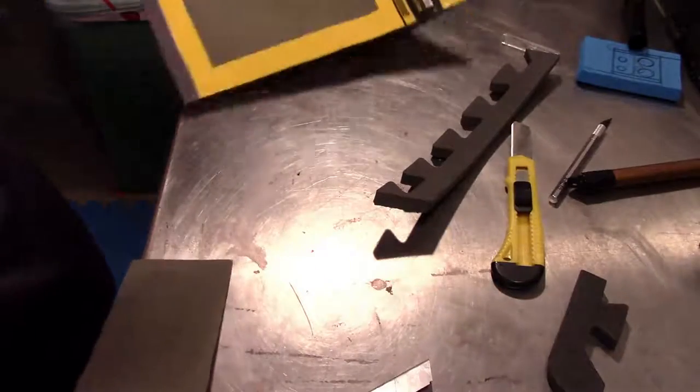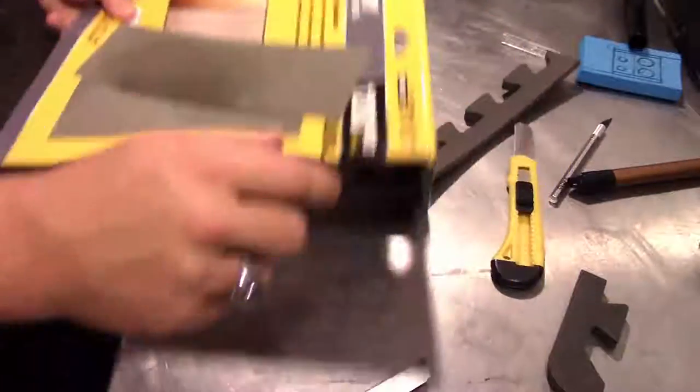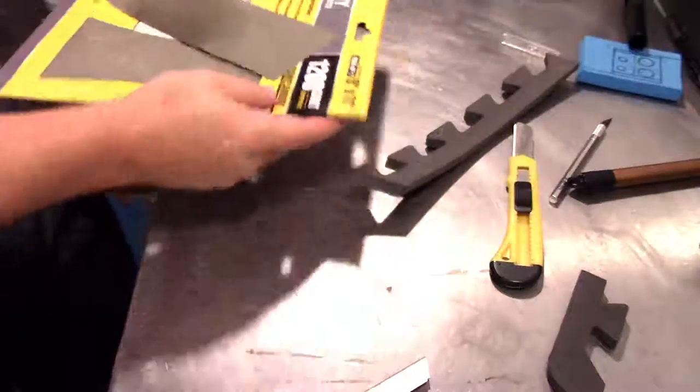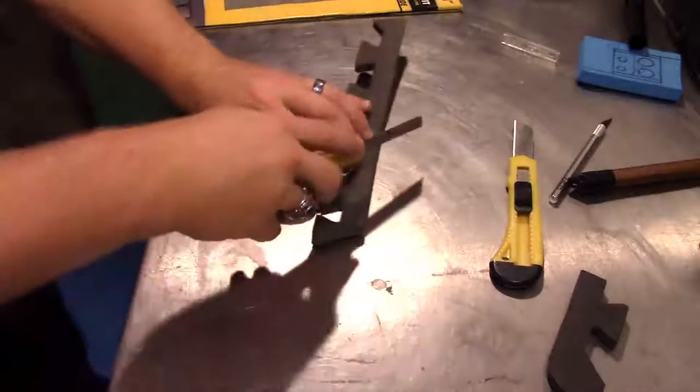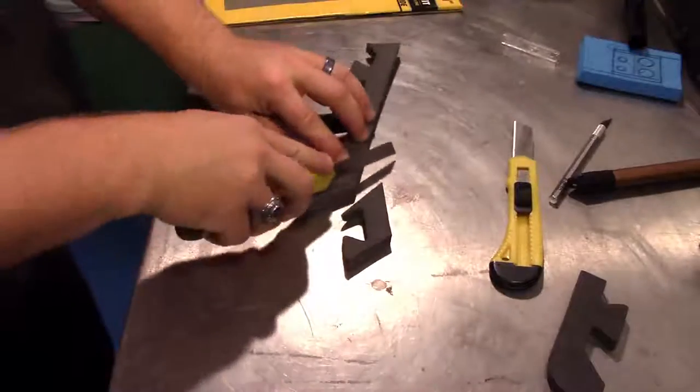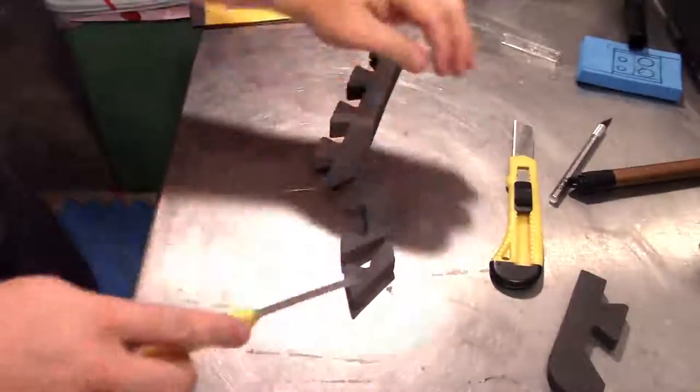This, again, is 1200 grit sandpaper. And I prefer this kind because it's wet and dry. It doesn't really hurt it if it gets something wet on it. And then we're right back to cutting foam with a nice sharp razor again.